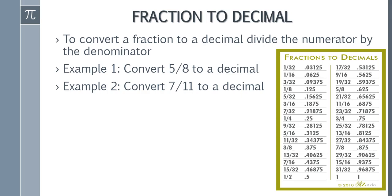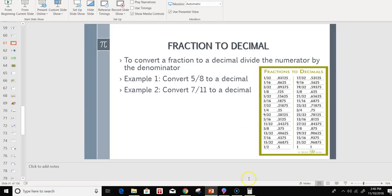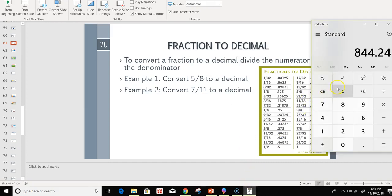For example, 5 divided by 8. Let's turn that into a decimal. We get the calculator. We can do 5 divided by 8. We get 0.625.